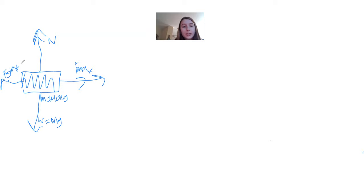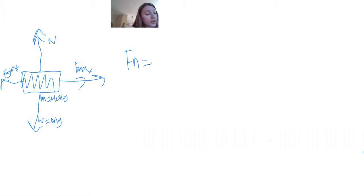Newton's second law says that net force is equal to ma, which is equal to F max minus F stat, which is equal to zero. So all in all, this means that F max is equal to the F stat.